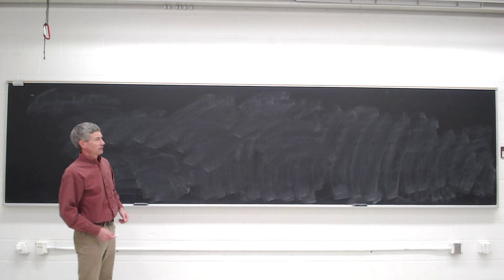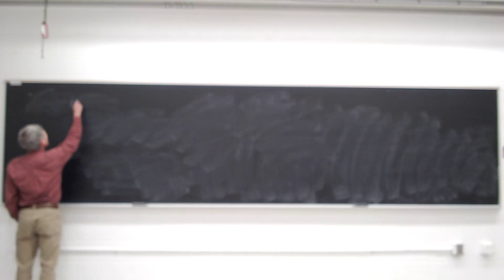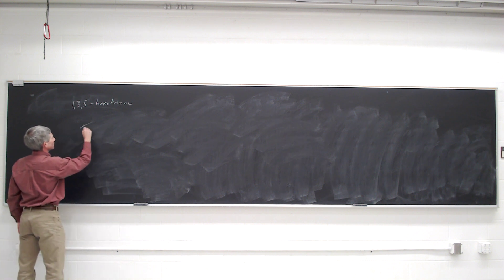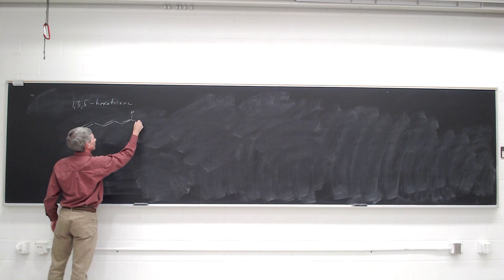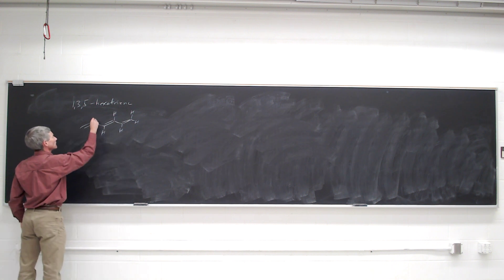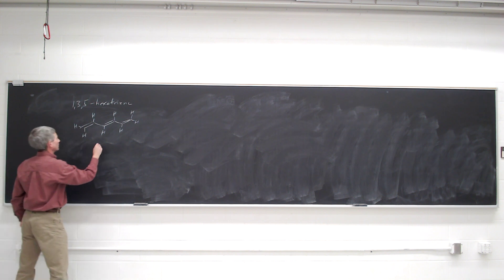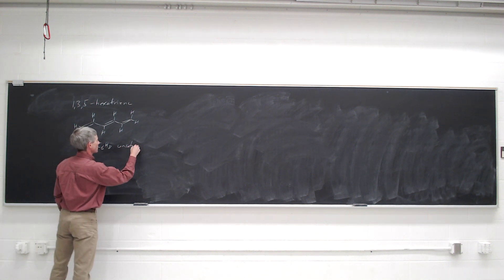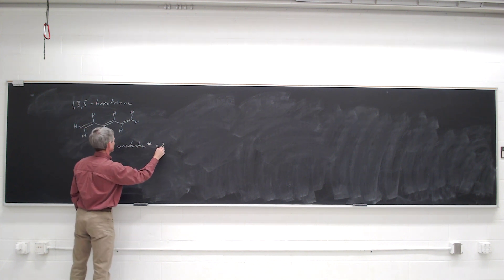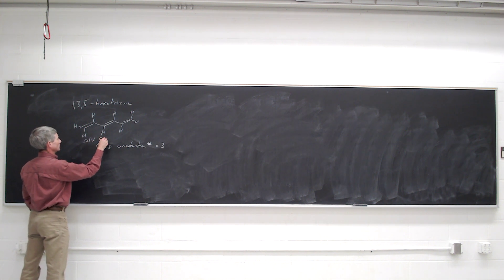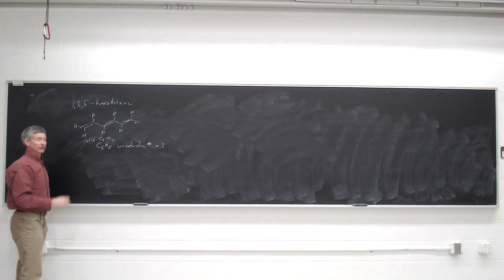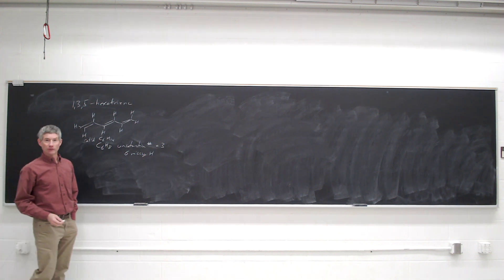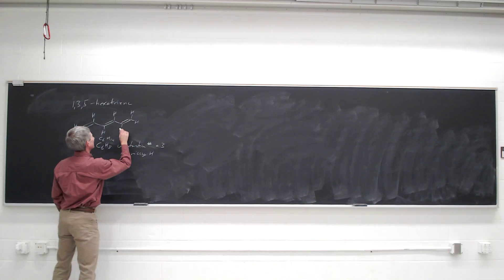Let's now take a look at the 6 pi electron extended pi system, 1,3,5-hexatriene. Its molecular formula is C6H8, and notice that the unsaturation number is 3, because saturated would be C6H14, and there are 6 missing hydrogens. Each pair of missing hydrogens counts as one degree of unsaturation, and we have 3 pi bonds, and they're all in conjugation.